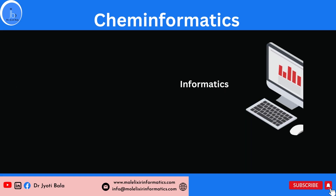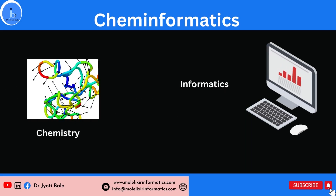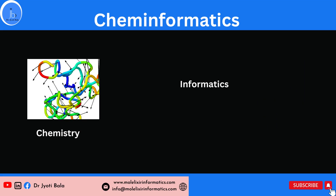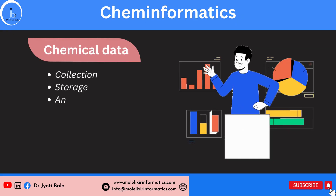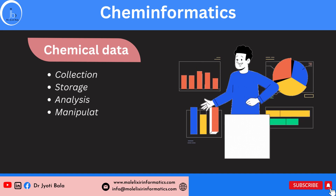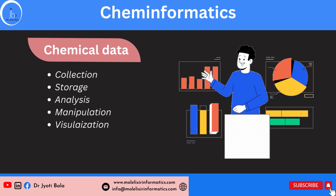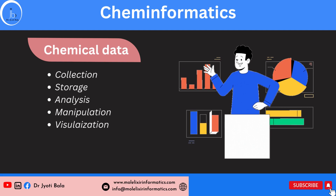Let's get started. Cheminformatics is basically the application of informatics techniques to study chemistry. It is a combination of chemistry and informatics, where you utilize informatics techniques to study chemistry. It involves the use of computational tools and techniques to process, analyze, and visualize chemical data and information.